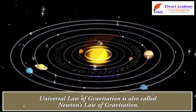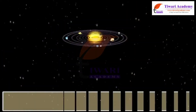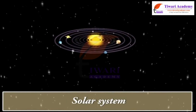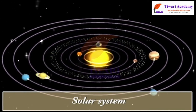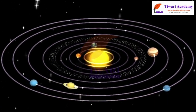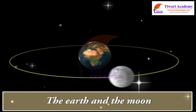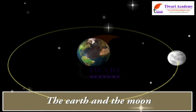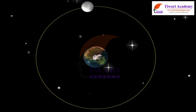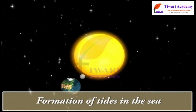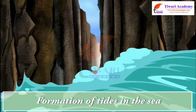The universal law of gravitation is also called Newton's law of gravitation. It is the gravitational force between the sun and the planets which makes them move around the sun. It is the gravitational force between the earth and the moon which makes the moon move around the earth. It is the gravitational force exerted by the sun and the moon on sea water, leading to the formation of tides in the sea.